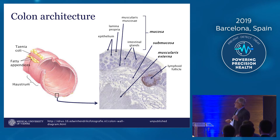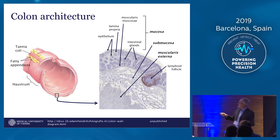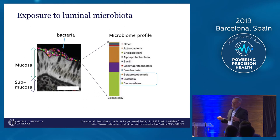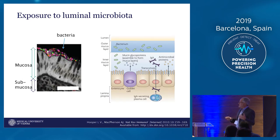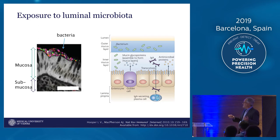Here you see a cross-section of the colon. You see the mucosa, the submucosa, and the muscle layer. The mucosa consists of a single epithelial cell layer, and underneath you find the lamina propria. In the lumen, you have many yards of different bacteria, and so the immune system has to deal with them in the normal situation. There are different mechanisms to impede the bacteria from going through this epithelial cell layer — first of all, you have a mucus which stops the bacteria.